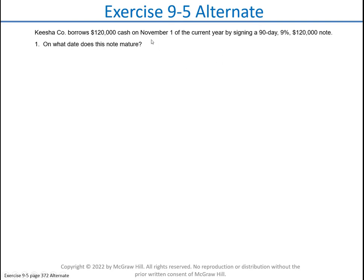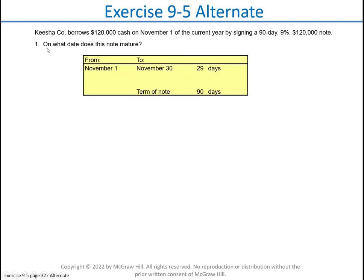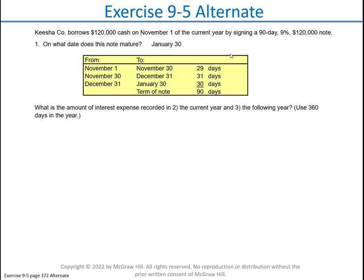The note began on November 1st. To find the maturity date, we subtract the date of the note from the number of days in that month — November 30 minus 1 gives us 29 days in November. December has 31 days, so that's 60 days total, and we need 30 more. That means the note is due on January 30th.